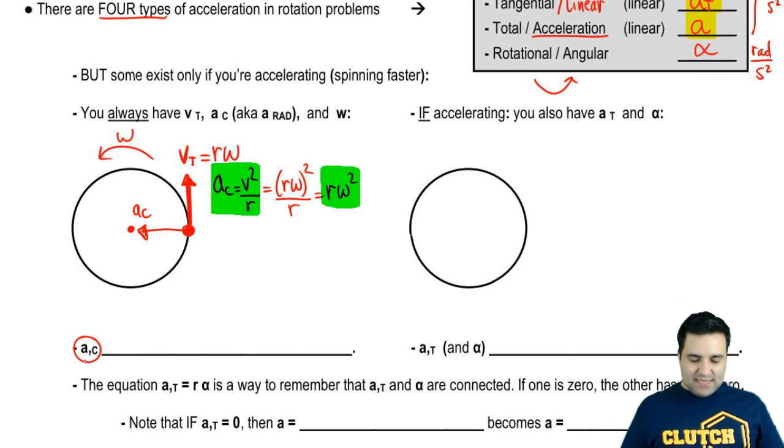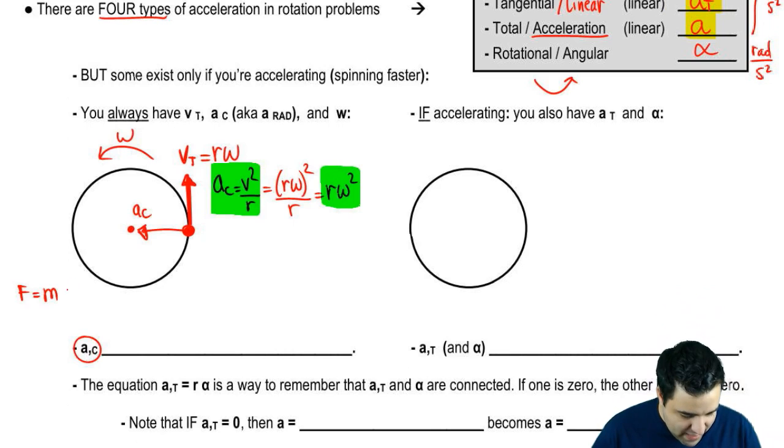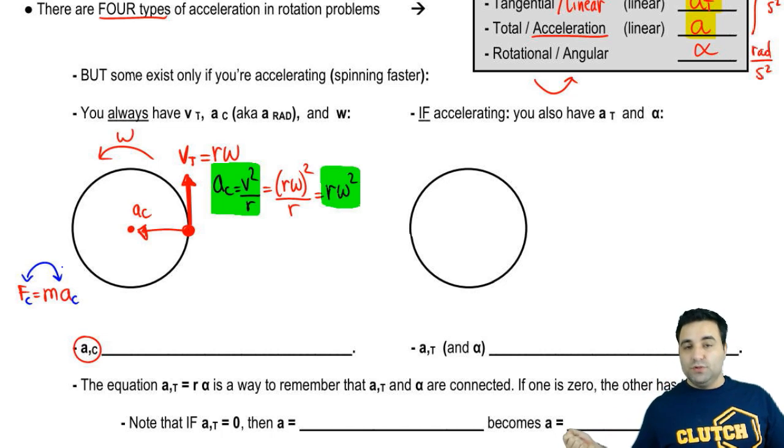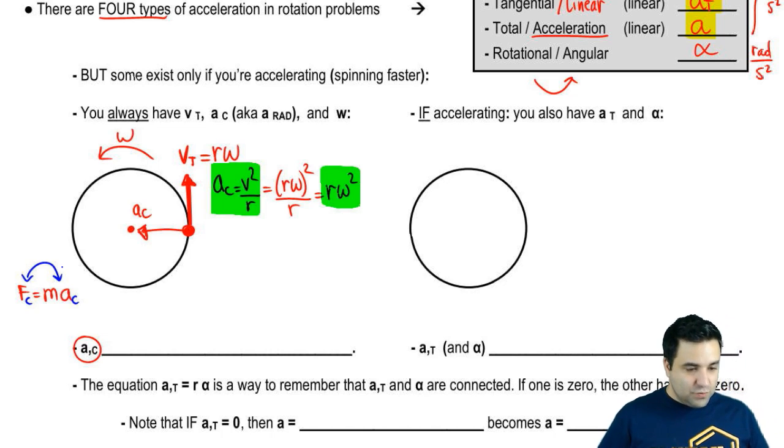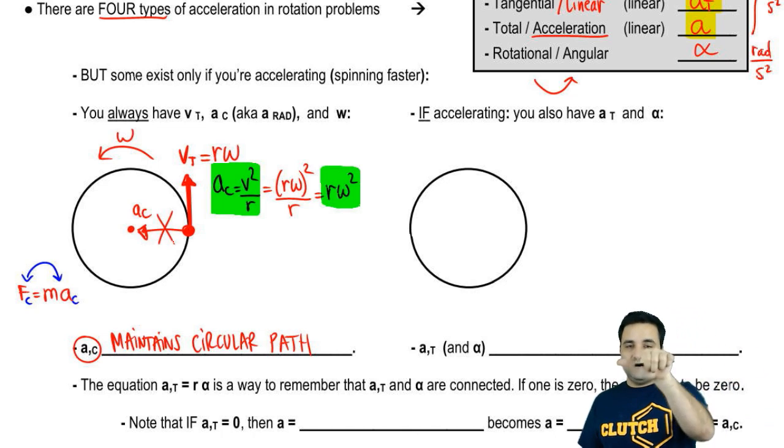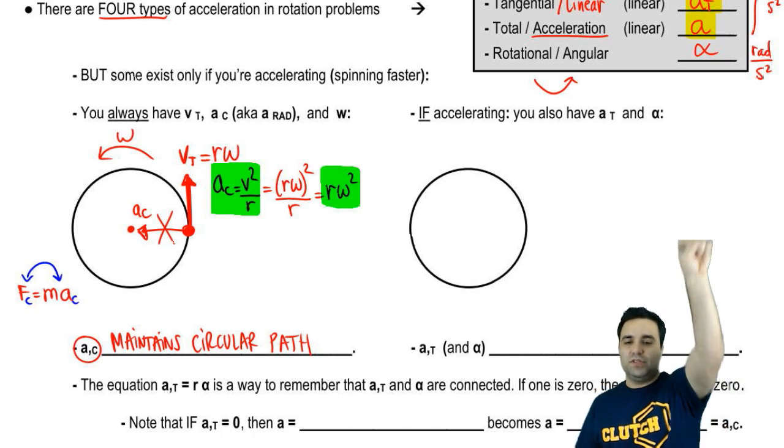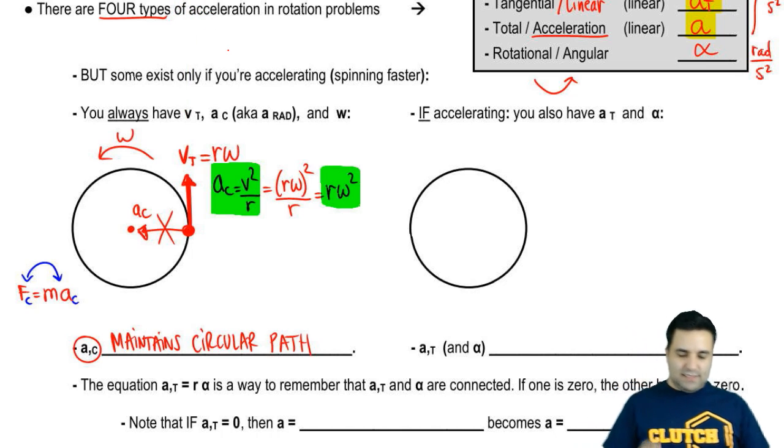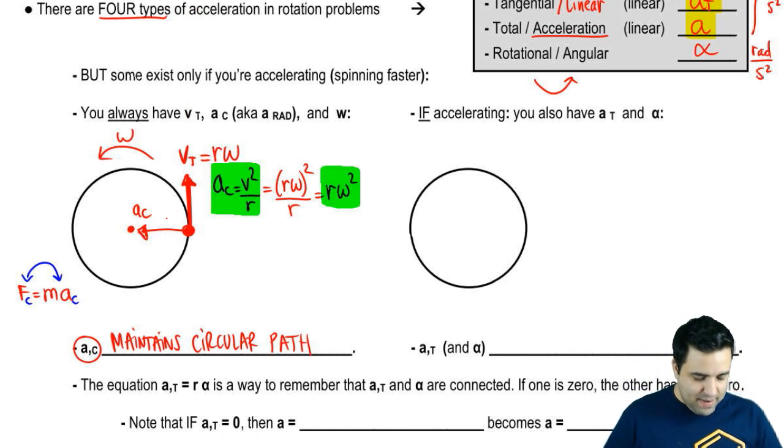These always exist. You always have AC because you have a centripetal force. There's a force that pulls you towards the middle. Therefore, you have a centripetal acceleration. AC is responsible for maintaining the circular path. Another way to think about this is that it keeps the object spinning. If AC doesn't exist, there's no longer a force pulling into the middle. So this object is going to go straight up in this direction. So AC maintains the circular path. As long as you're moving in a circle, you have to have AC and you have to have VT. So these things always exist. And you have omega because obviously you're spinning.